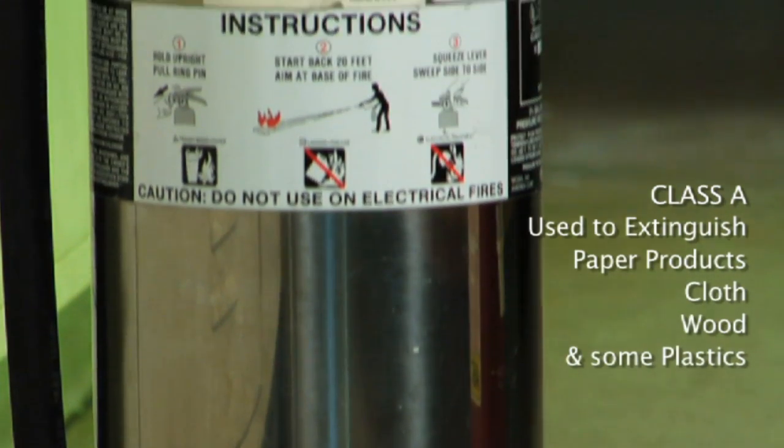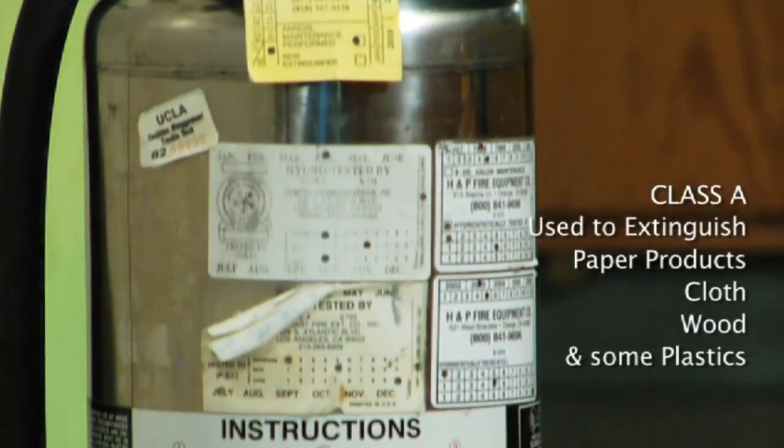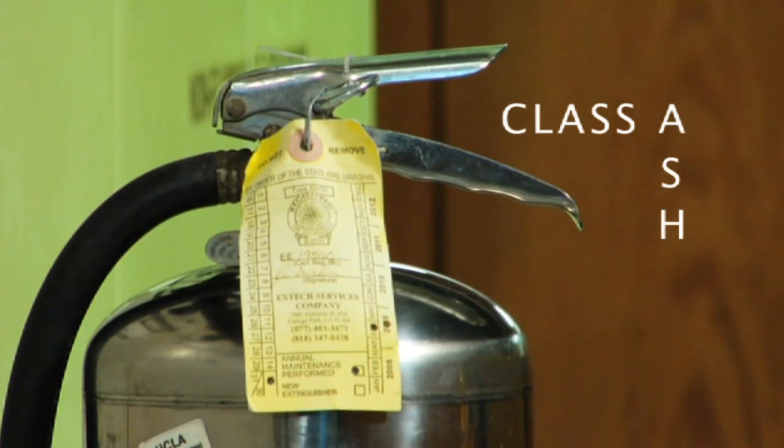Class A fire extinguishers are used to extinguish fires involving ordinary combustibles, such as paper products, cloth, wool, and some plastics. Some people find it helpful to remember Class A fires produce ash.